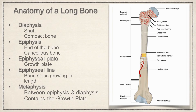In this lecture we're going to look at the anatomy of a long bone. Here's the diaphysis. The diaphysis is the shaft of a long bone. It's comprised of compact bone, which is a very tough, very dense type of bone.